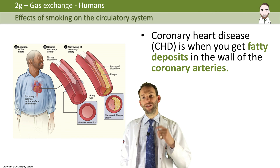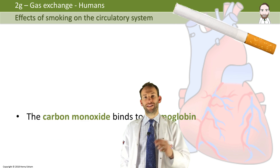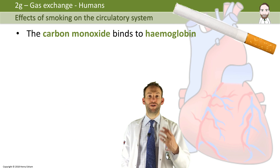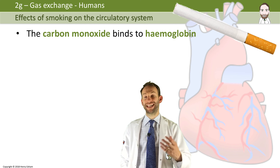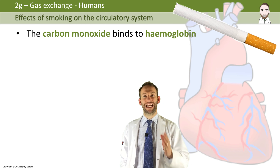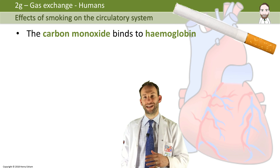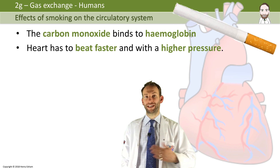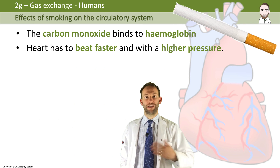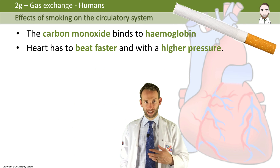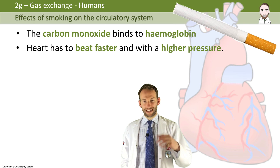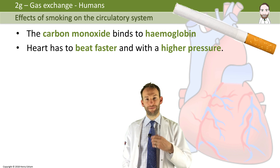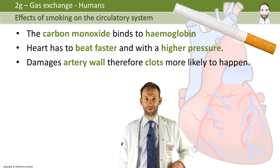When you smoke, carbon monoxide binds to haemoglobin and you form carboxyhaemoglobin instead, which means you cannot carry as much oxygen around. If there's not enough oxygen, your heart beats faster and increases blood pressure to try to get more oxygen around. That's not good because it can damage the artery wall and makes clots even more likely to happen.